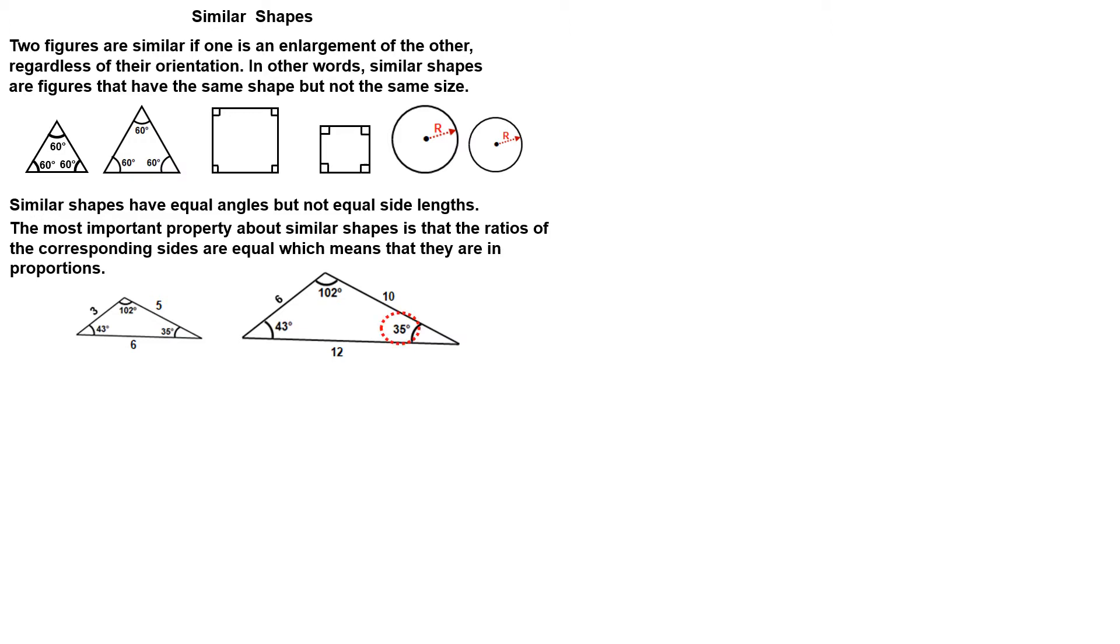Correspondent sides are the pairs of sides opposite the same angles. Start at 35 degrees. 6 and 3 are corresponding sides. Look at 43 degrees. 10 and 5 are corresponding sides. Look at 102 degrees.